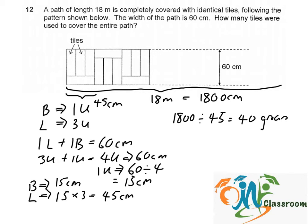So there will be 40 groups of 4 tiles, and the total number of tiles required will be 40 times 4, which equals 160.